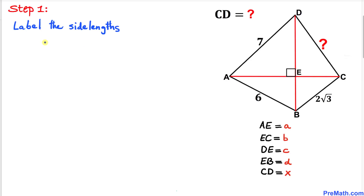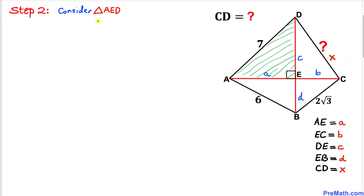Here's our very first step: let's label the side lengths. I'm going to call side length AE as lowercase a, side length EC as lowercase b, side length DE as lowercase c, side length EB as lowercase d, and finally I am going to call side length CD as x.